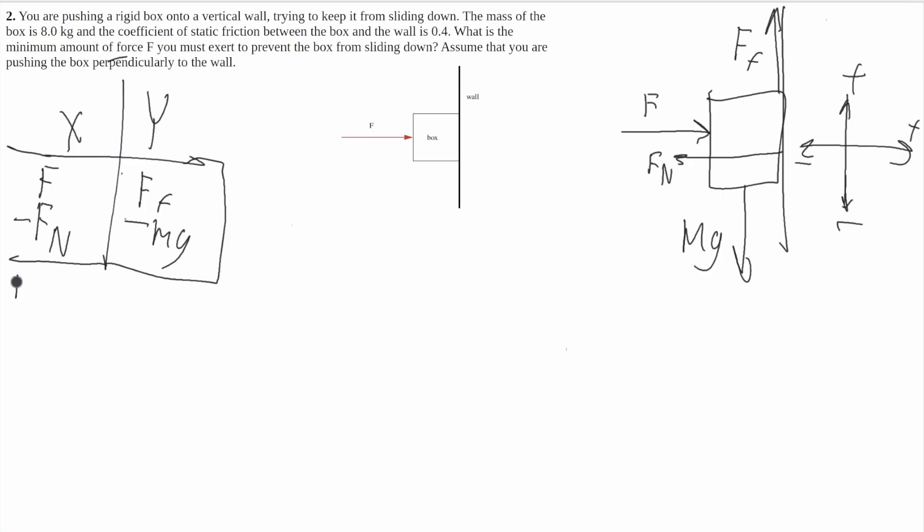So now we can go in the x and say F equals ma, and the acceleration in the x is going to be zero because it's not getting pushed into the wall or flying into the wall. So it'll be F minus Fn equals zero, and it'll be F equals Fn. That's your force equation in the x.